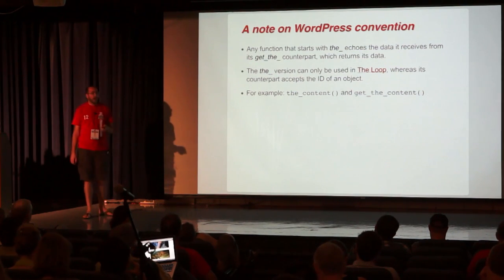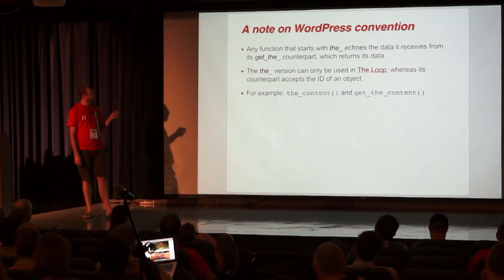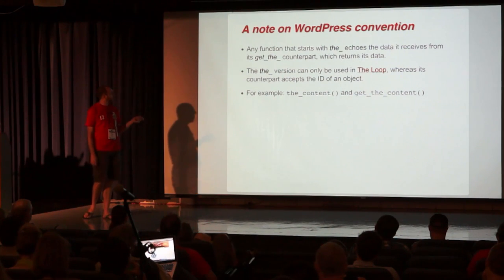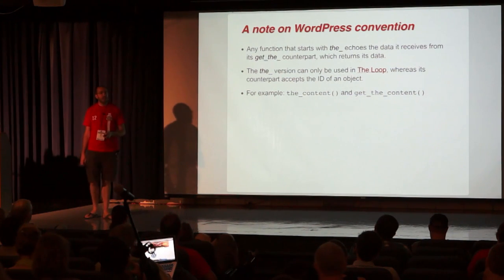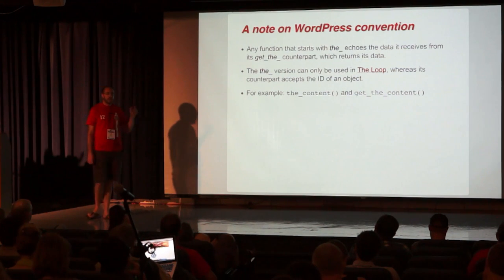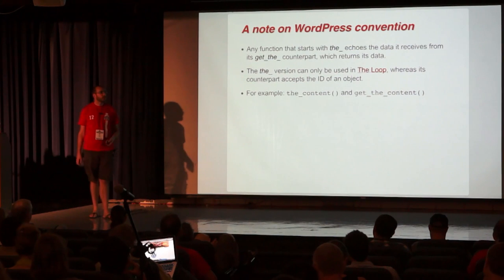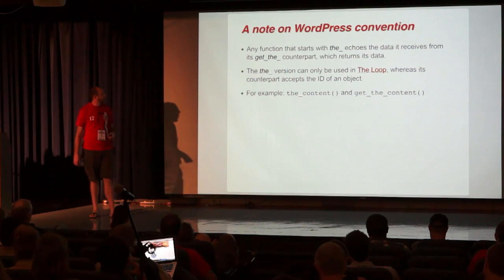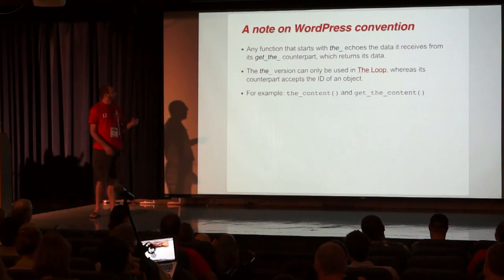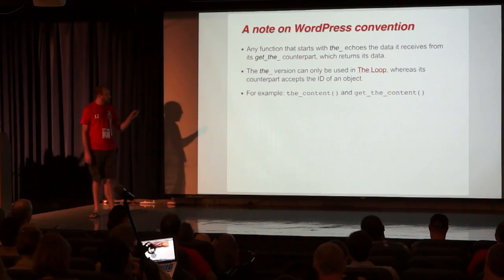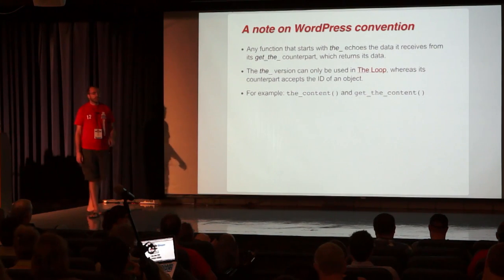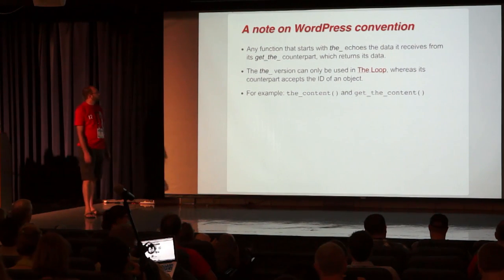That's really why you have the_content and get_the_content. What the_content does: it takes the data returned by get_the_content and echoes it, applying some filters and things to it. That's really why you've got the two different ones — it's just different use contexts.